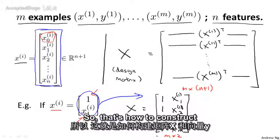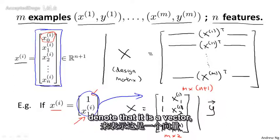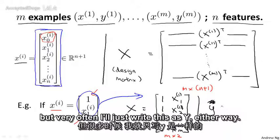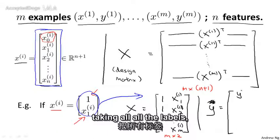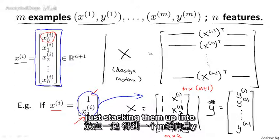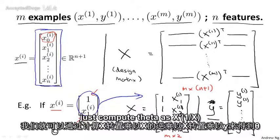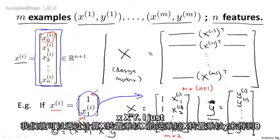The vector y is obtained by taking all the labels — all the correct prices of houses in my training set — and stacking them up into an m dimensional vector. Having constructed the matrix X and the vector y, we then compute theta as X transpose X inverse times X transpose y.